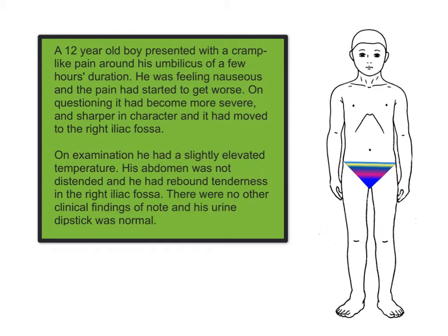Let's consider a typical case. A 12-year-old boy presented with a cramp-like pain around his umbilicus of a few hours' duration. He was feeling nauseous, and the pain started to get worse. On questioning, the pain had become more severe and sharper in character, and it had moved towards the right iliac fossa.